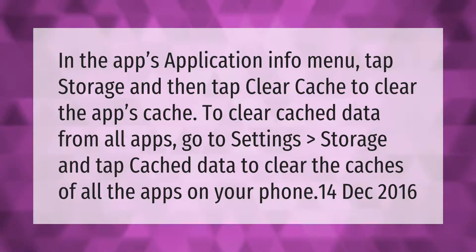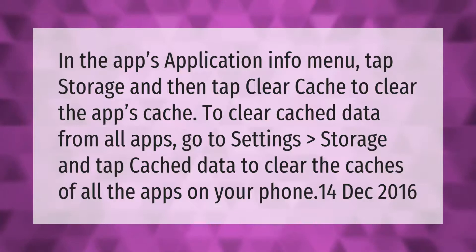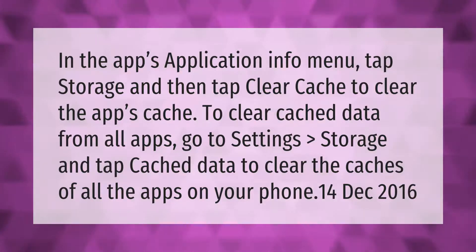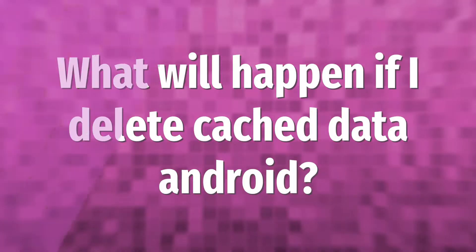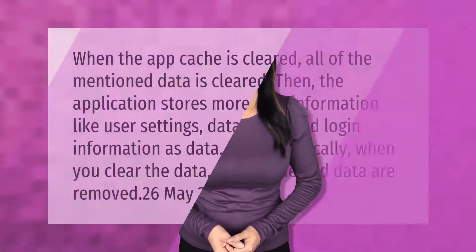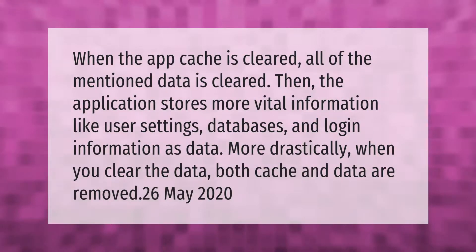To clear cache data from all apps, go to Settings, then Storage, and tap Cache Data to clear the caches of all the apps on your phone.